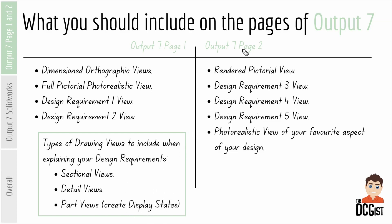Then on page two, a render pictorial view, design requirement three view, four and five view, and then a photorealistic view of your favorite aspect of your design. What you'll have in there is that you're always trying to talk about the requirements when you're talking about these views, to make sure that the person reading it understands where each one of them came from and why you have them in your drawings. The idea of why you've used something is really important — you want to make sure there's a why for everything that you do in these pages and throughout the project.